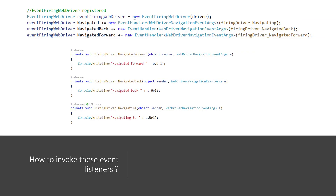How to invoke these event listeners is the next question. The EventFiringWebDriver in C# is different from Java because the syntax is a little different. You do something like: eventFiringWebDriver = new EventFiringWebDriver(driver), pass your driver in, and then call the event listeners using new event handler delegates. For example, firingDriver.Navigating, firingDriver.Navigated, firingDriver.NavigatedForward, and similar.